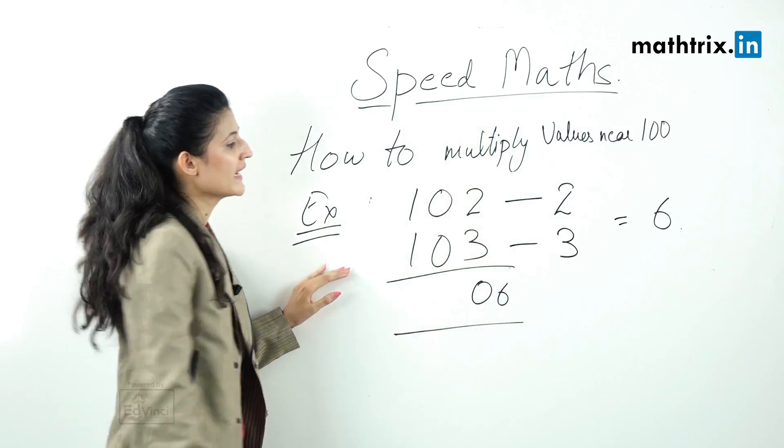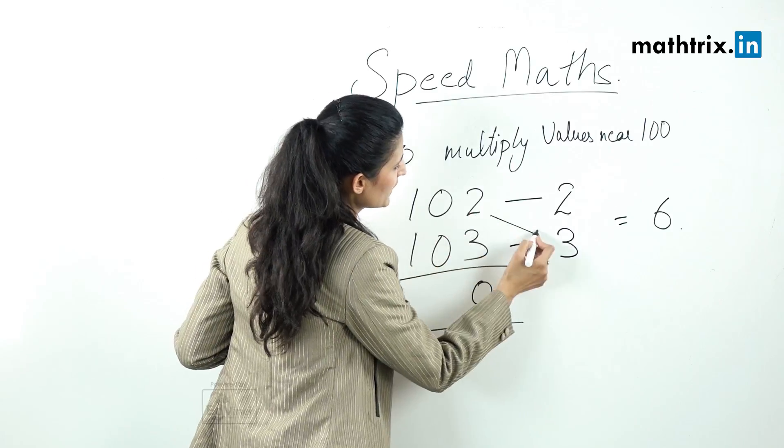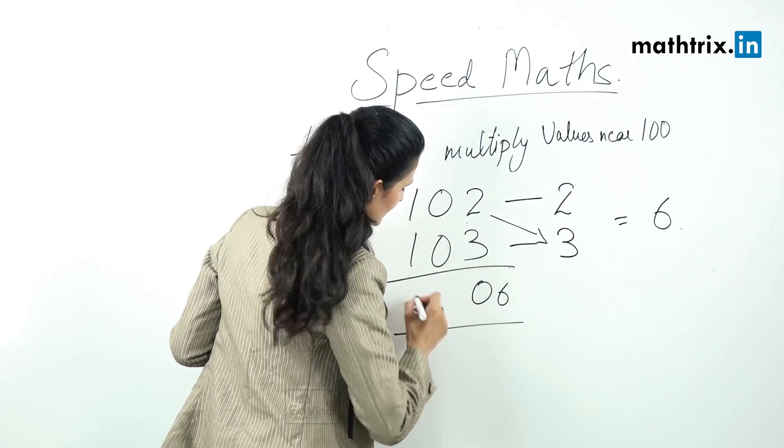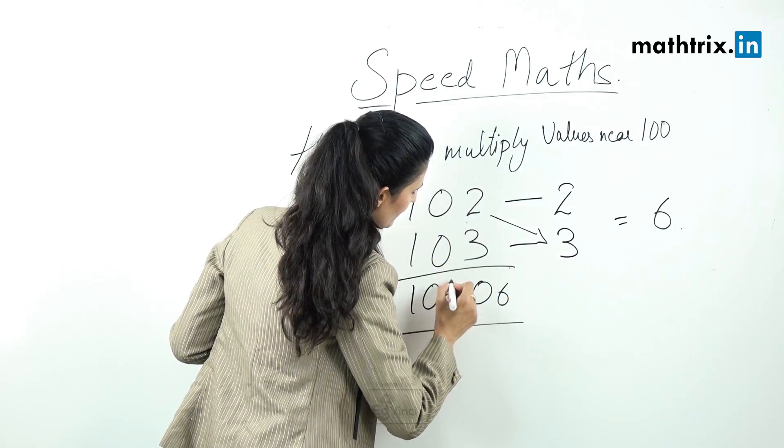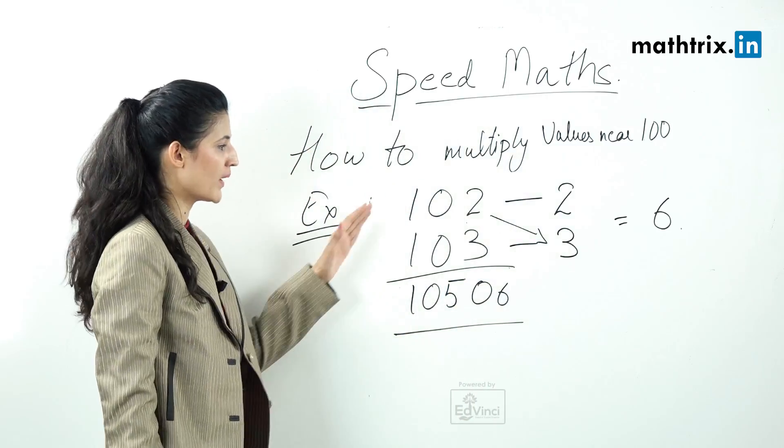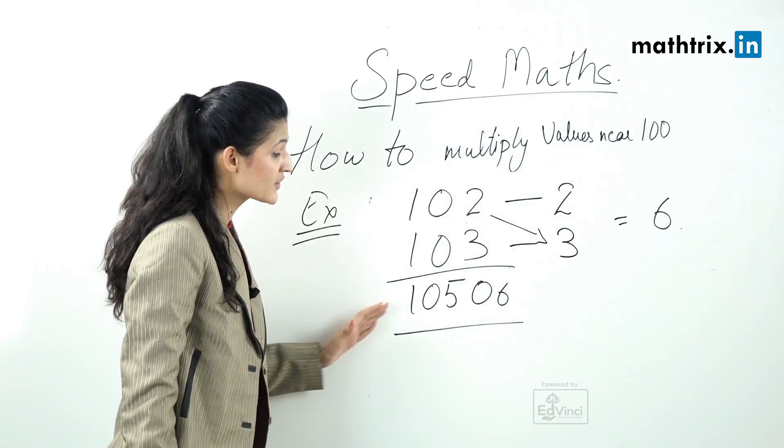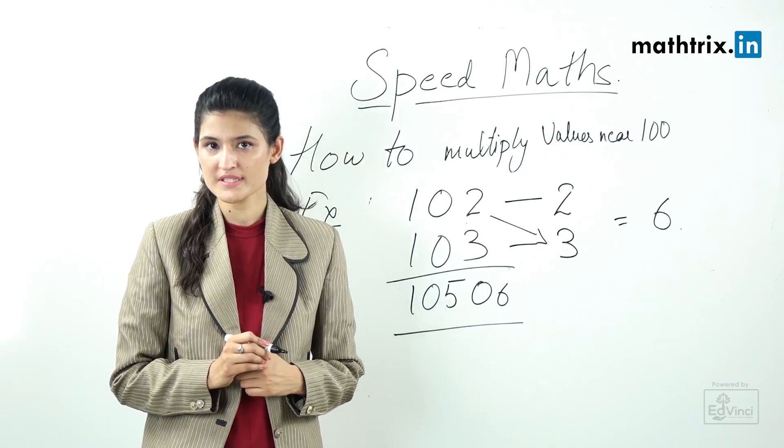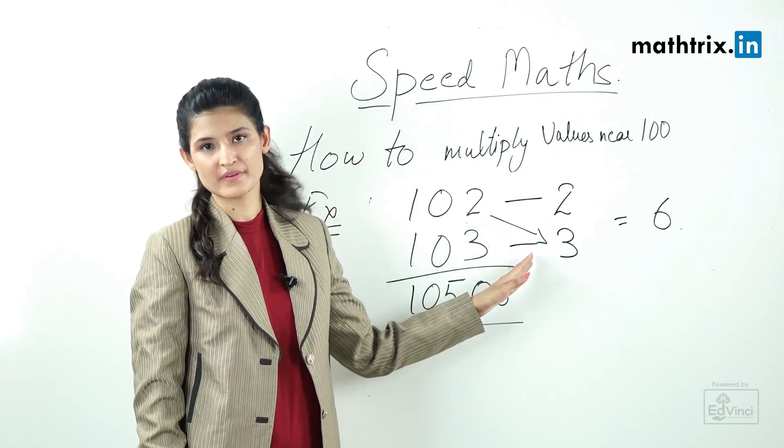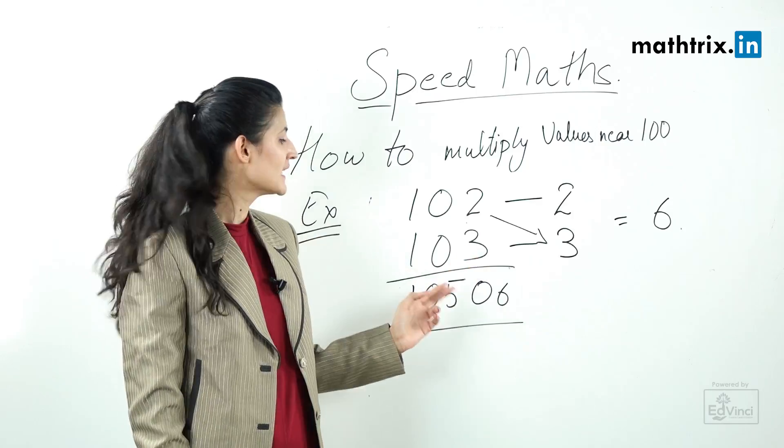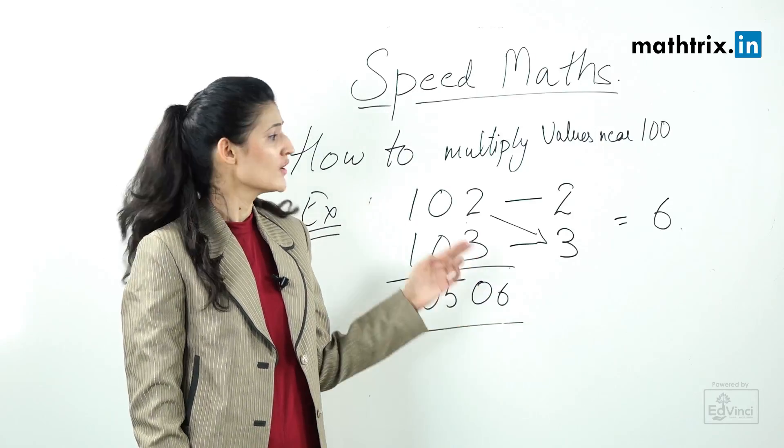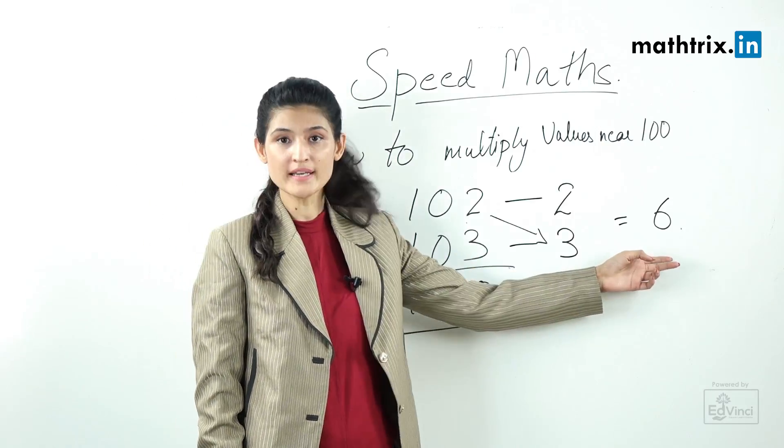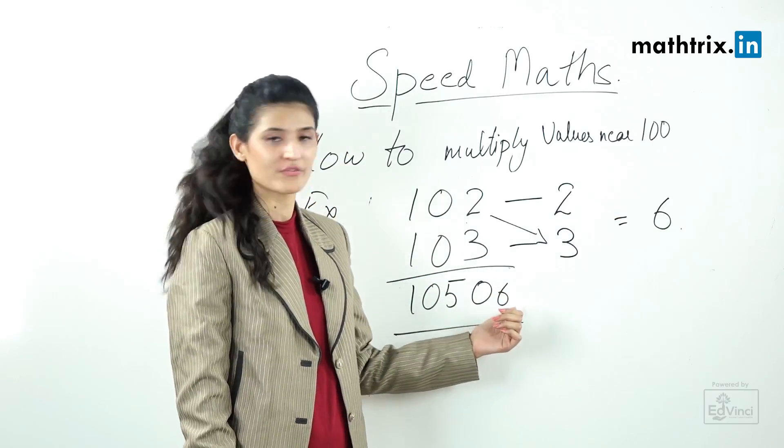Step number 4 is cross addition where we will add 102 plus 3 which is 105. So our answer for 102 into 103 is 10506. I want to stress a point here: multiplication of the differences always gives us the last 2 digits of the answer. So in case we are getting only 1 digit, we should put a 0 before that.